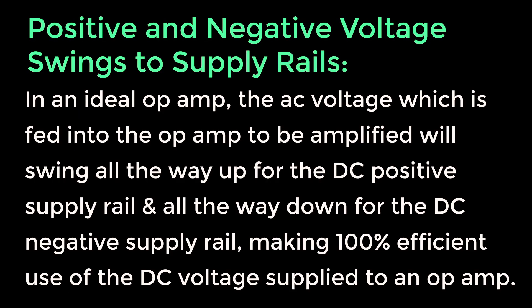Positive and negative voltage swings to supply rails. In an ideal op-amp, the AC voltage which is fed into the op-amp to be applied will swing all the way up for the DC positive supply rail and all the way down for the DC negative supply rail, making 100% efficient use of the DC voltage supplied to an op-amp.